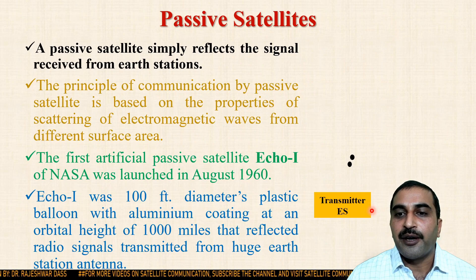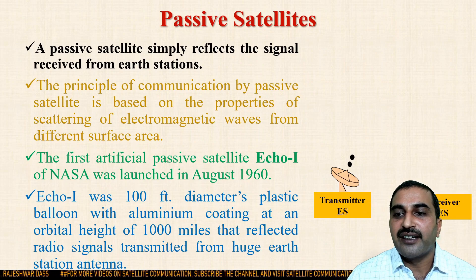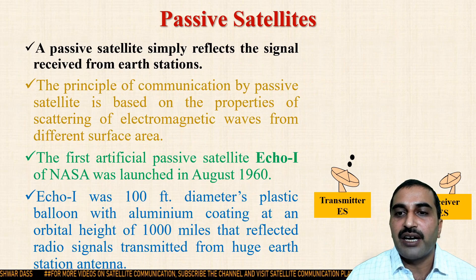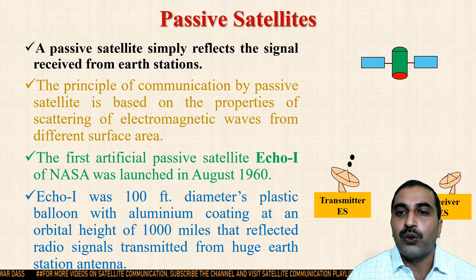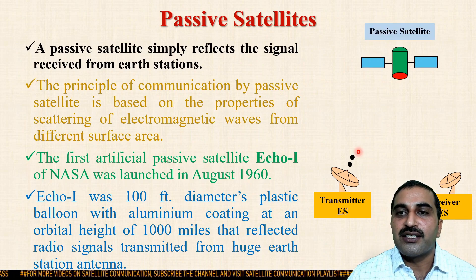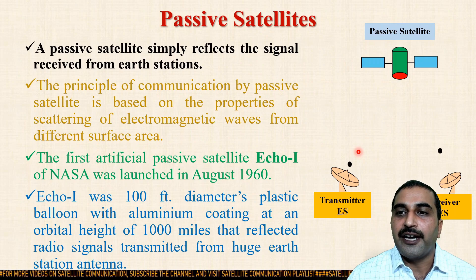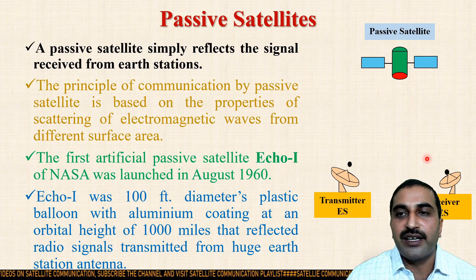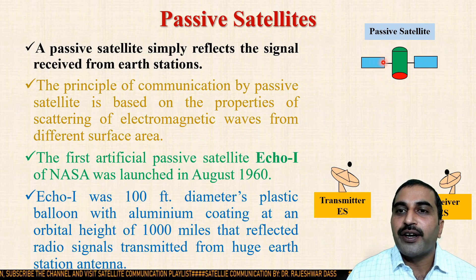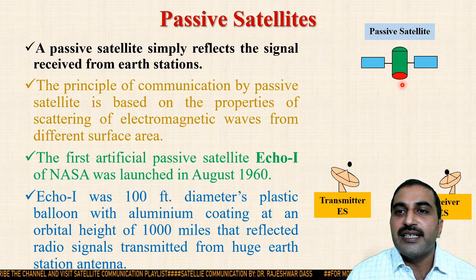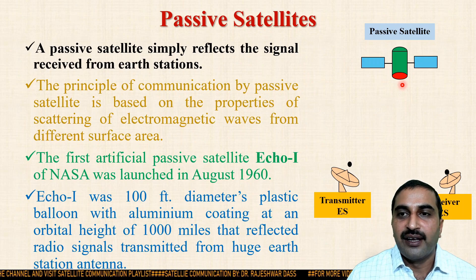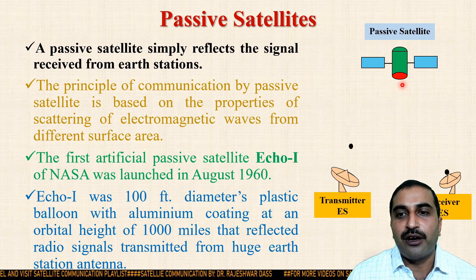Now look at this diagram. The transmitting Earth station and the receiving Earth station are both available on the ground. The transmitting Earth station transmits the signal towards the satellite, which then reflects the signal back towards the receiving Earth station. If this satellite is working as a mirror only — simply reflecting back the signal — then that satellite is known as a passive type of satellite.